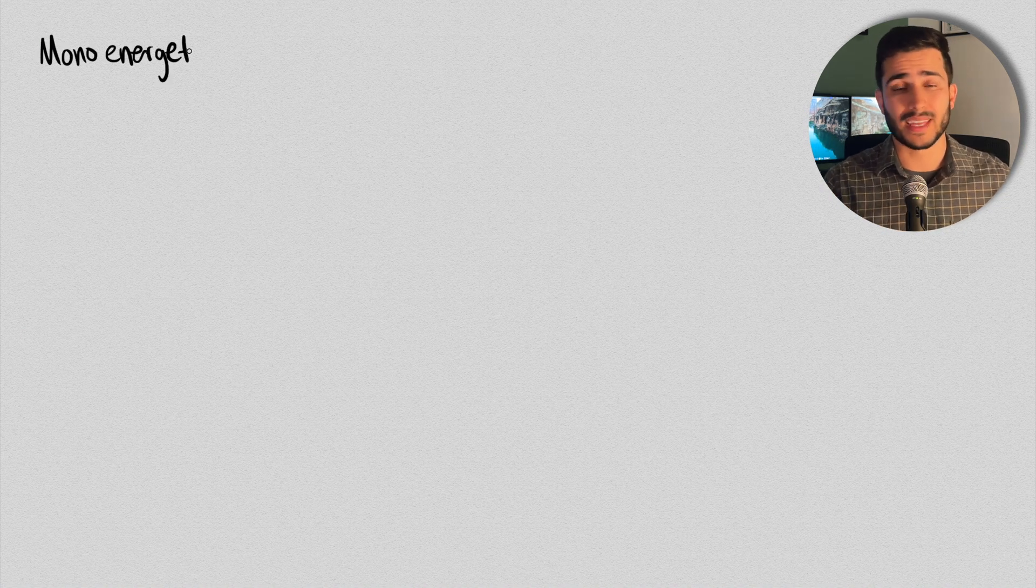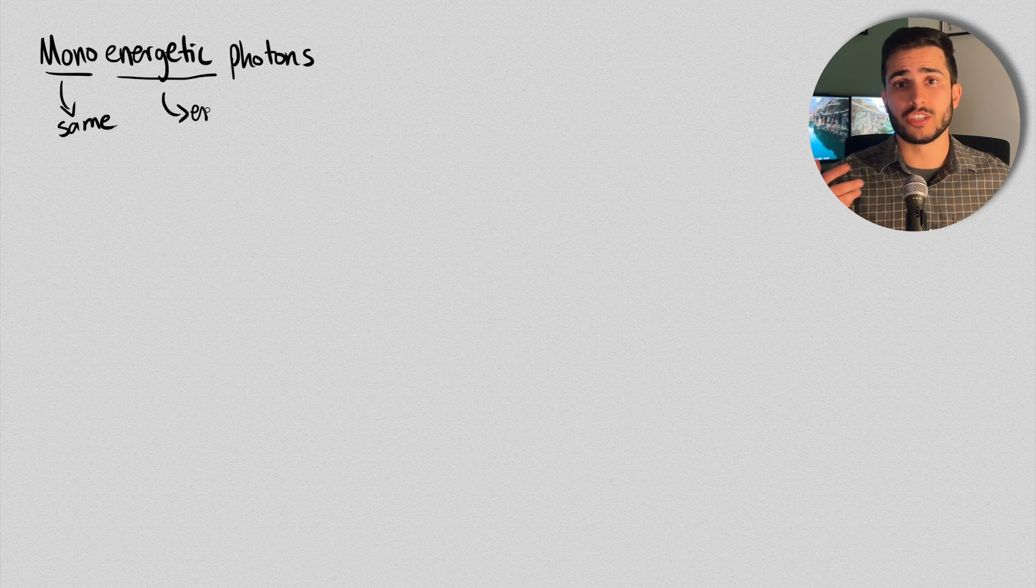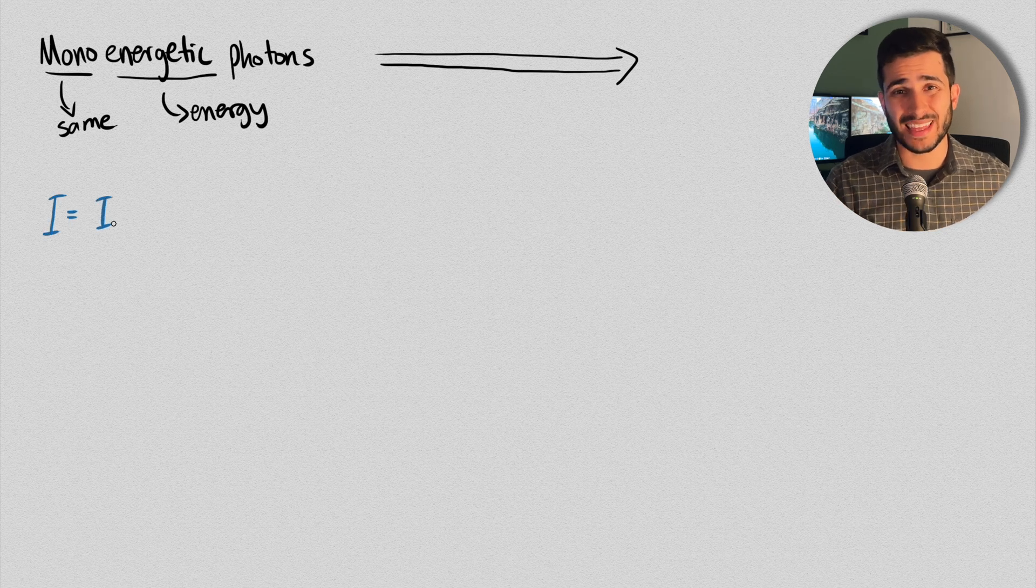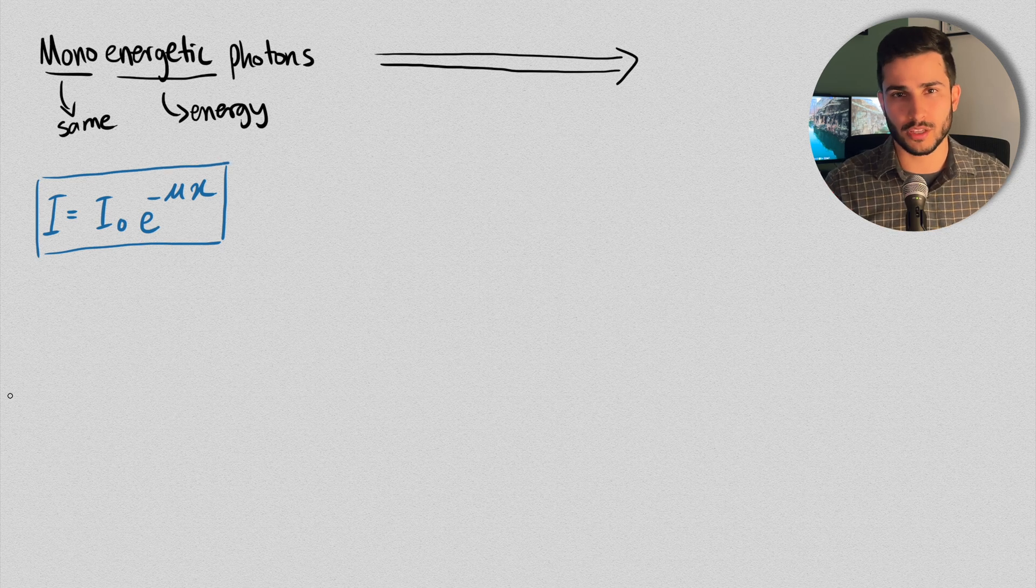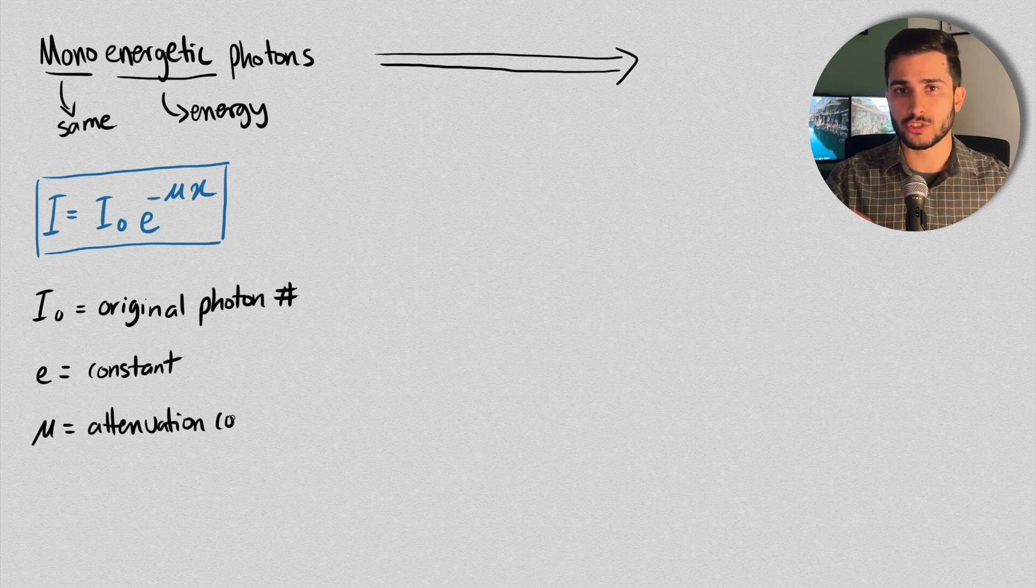Now, if the photons had the same energy, that is, the beam was mono-energetic, and if the photons were attenuated under good geometric conditions, which is the idea that the beam is narrow and is transmitted without any scattered photons, then the number of photons penetrating a thin slab of material with a thickness of X would be given by the following formula.